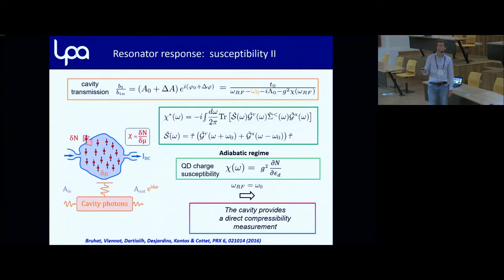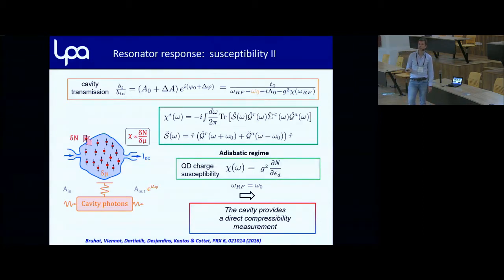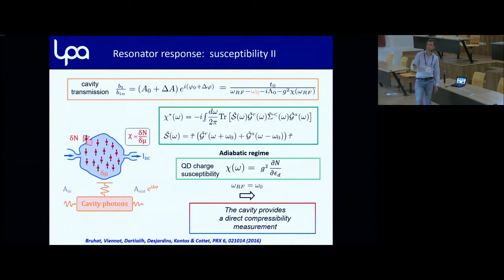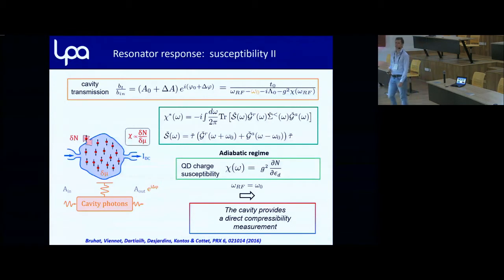Of course you can have a more generic form of χ using linear response theory at finite frequency. Two things happen: χ can pick up an imaginary part due to retardation effects, and this complex structure also arises when you have a superconducting contact, giving some underlying structure. But the cavity still provides a direct compressibility measurement.